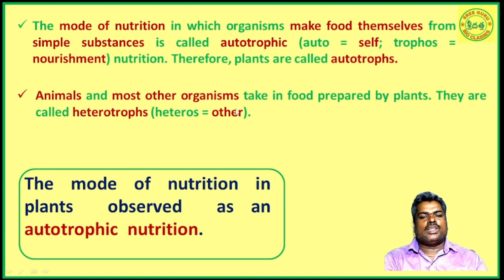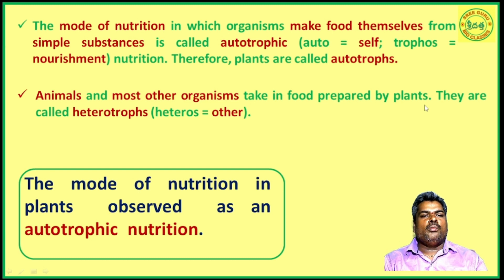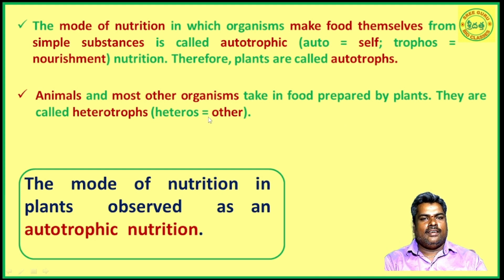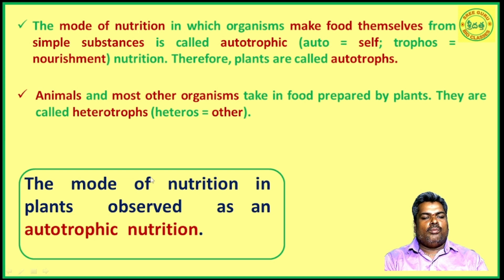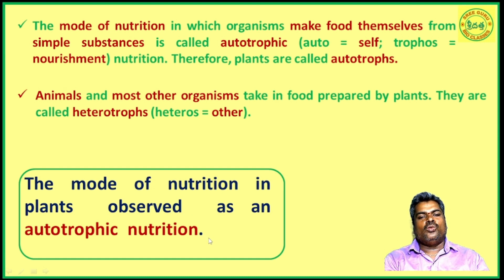Animals and most other organisms take in food prepared by plants; they are called heterotrophs. They depend on plants for food materials. Heteros means 'other' — organisms that take food from other organisms are called heterotrophs. So the mode of nutrition in plants is observed as autotrophic nutrition.